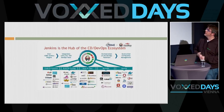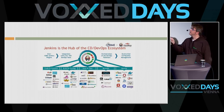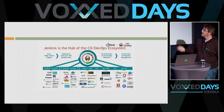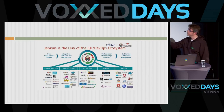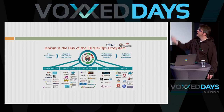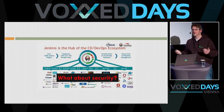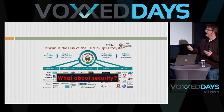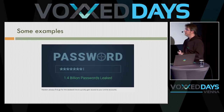I found a picture on the internet about Jenkins and the CI/CD DevOps ecosystem — it has all kinds of tools in all kinds of phases: build, scan, release, deploy, and so on. But there's nothing in it for security. That's kind of weird, and I want to show you a couple of examples of security failures.